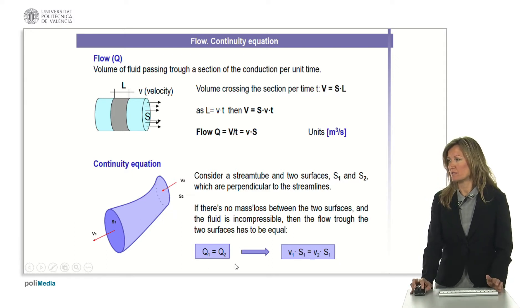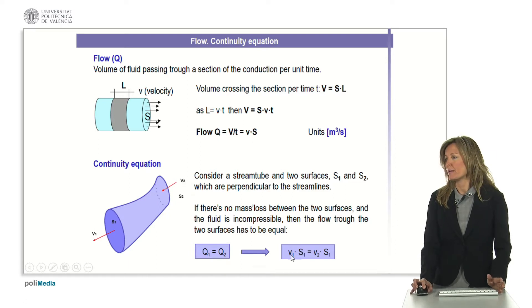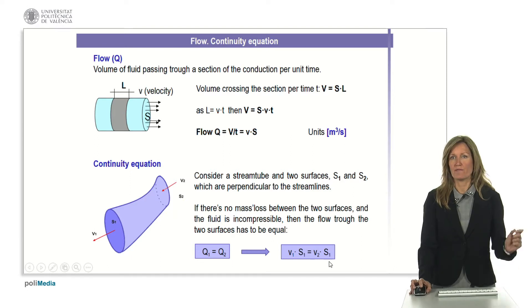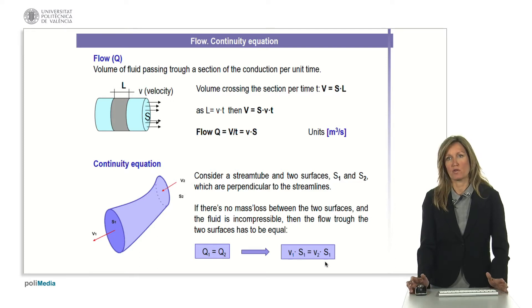If we consider that the flow is the same through the two different sections, then what we obtain is that product of velocity cross sectional area which stays constant. This is the continuity equation and is very useful to calculate different velocities of the fluid in different sections of the pipes.